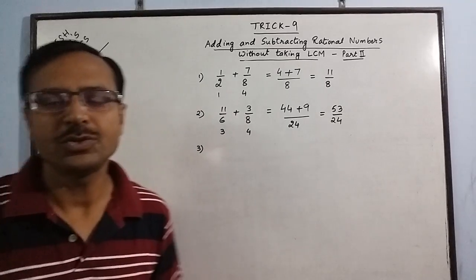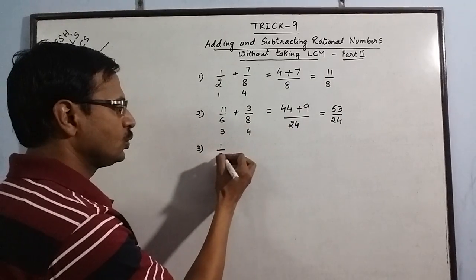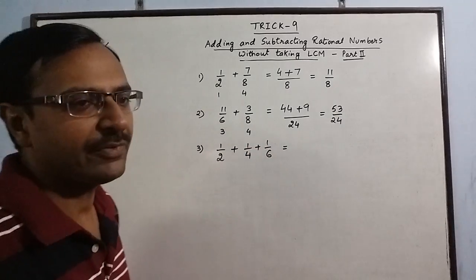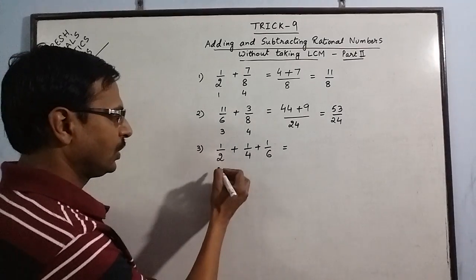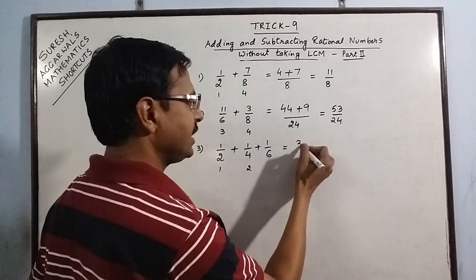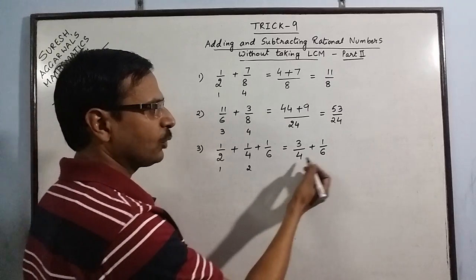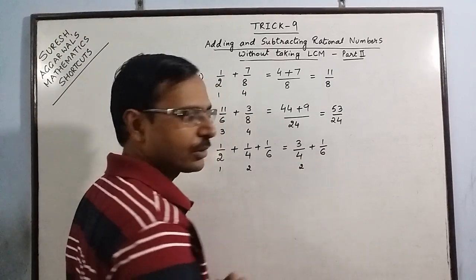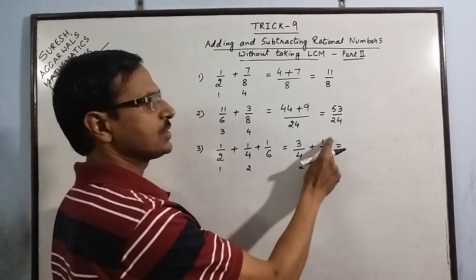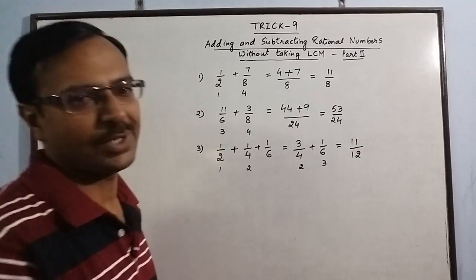Now let us take one more example with three rational numbers having a common factor: 1/2 plus 1/4 plus 1/6. I cancel the common factor between the first two — 2 ones are 2 and 2 twos are 4 — giving 2 plus 1 is 3 over 2 times 2 is 4. The other rational number is 1/6. Again 4 and 6 have a common factor of 2: 2 twos are 4 and 2 threes are 6. So: 3 times 3 is 9, plus 2 times 1 is 2; 9 plus 2 is 11. The denominator is 4 times 3 or 6 times 2, both giving 12. So the answer is 11/12.